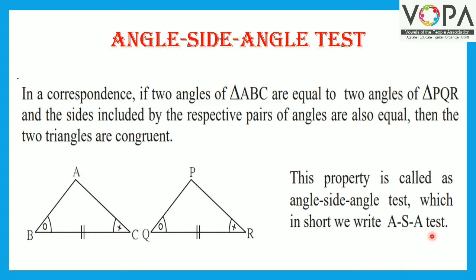Let's understand this test with the help of a figure. Here, triangle ABC and triangle PQR are shown. Angle B is congruent to angle Q, and angle C is congruent to angle R, as shown with the equal ticks. The side between these two congruent angles — side BC — is congruent to side QR, which is the included side between these two angles. Therefore, these two triangles are congruent by the ASA test.